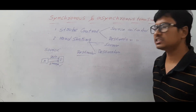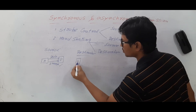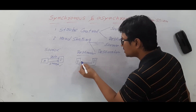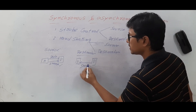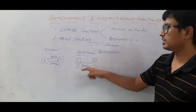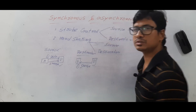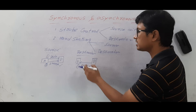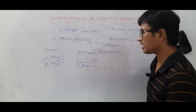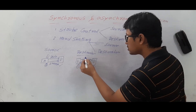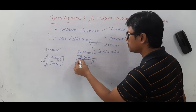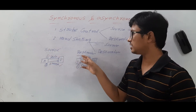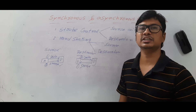In the destination-initiated strobe signal, we again have a source and a destination. Here, the destination sends the strobe signal first — that is step one — asking the source for data. Then the source sends the data in response — that is step two. This is the key difference from source-initiated: here the destination requests the data before the source sends it. I hope you have understood the difference between source-initiated and destination-initiated strobe signals.